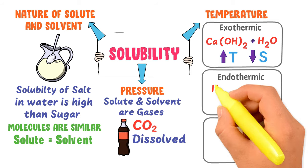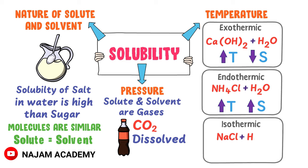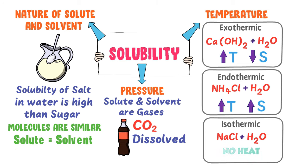Secondly, when you add ammonium chloride to water, heat is absorbed from the surroundings — this is an endothermic reaction. If we increase the temperature, the solubility of ammonium chloride in water increases. Thirdly, when you add salt to water, heat is neither absorbed nor released — this is an isothermic reaction. Increasing or decreasing the temperature does not change the solubility of sodium chloride in water.